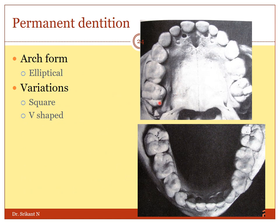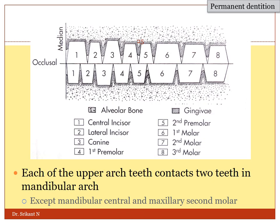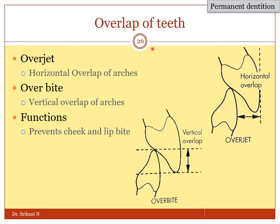When you look at the permanent dentition, generally the arch form is elliptical. There may be a square or V-shaped arch seen in some populations. This is how the maxillary and the mandibular teeth overlap. The maxillary third molar and the mandibular central incisor are the only two teeth which contact with one opposing tooth; all the rest contact with two opposing teeth. There are three important concepts: the overlap of teeth — which may be overjet or overbite — and the curve of compensation.